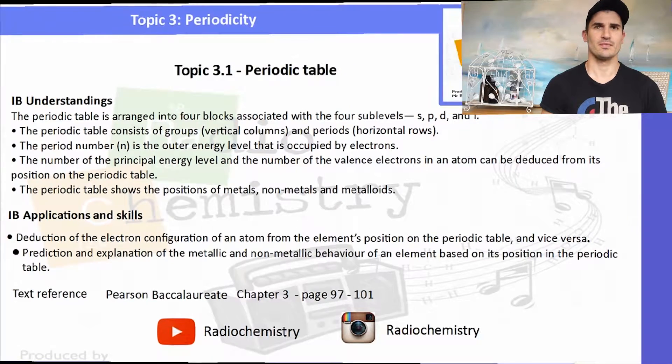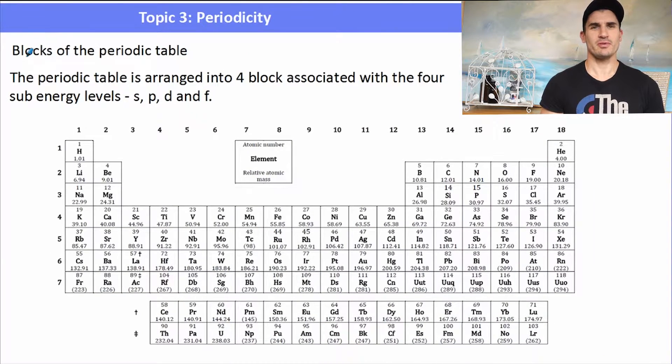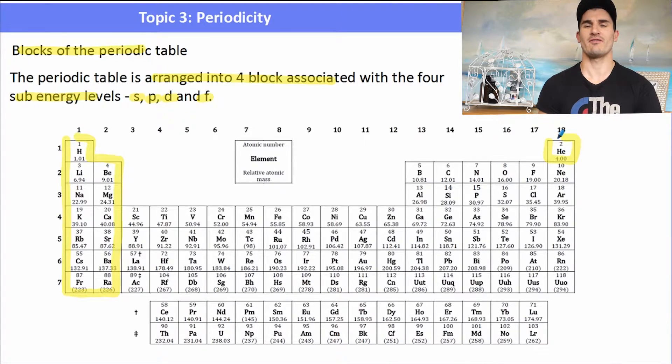We also need to know the location of the metals, non-metals, and metalloids. So the blocks of the periodic table - the periodic table can be arranged into four blocks associated with the four sub energy levels: S, P, F, D. The electron configurations made us arrange the periodic table, and this is the first block - the S block is what fills up first. When we have 1s1, that's hydrogen, and 1s2, that's helium. So the S block is the first two groups of the periodic table, including helium.